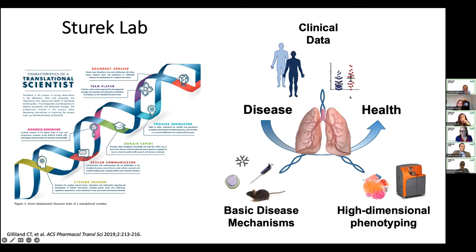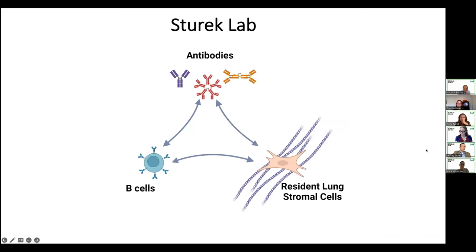The layout of my group is that we focus on lung inflammation and fibrosis. I'm a pulmonary critical care doctor. We use clinical data, mouse models of disease mechanisms, and our techniques focus on high-dimensional immunophenotyping where we look at immune cells and how they move in and out of the lung. Our main focus is around B cells — the B cells, the antibodies they make, and how those things interact with lung-resident stromal cells to contribute to disease and repair.